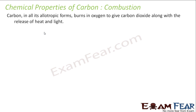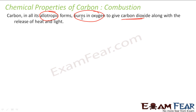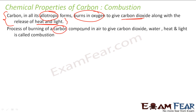Carbon has four chemical properties. The first is Combustion. You take any Carbon in any form, it burns in Oxygen to give Carbon dioxide, heat and light. That is the test of Carbon. And the process of burning a Carbon compound in air to give Carbon dioxide, water, heat and light is called Combustion.